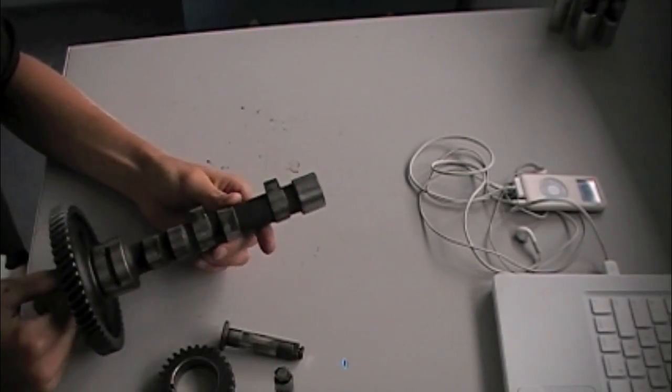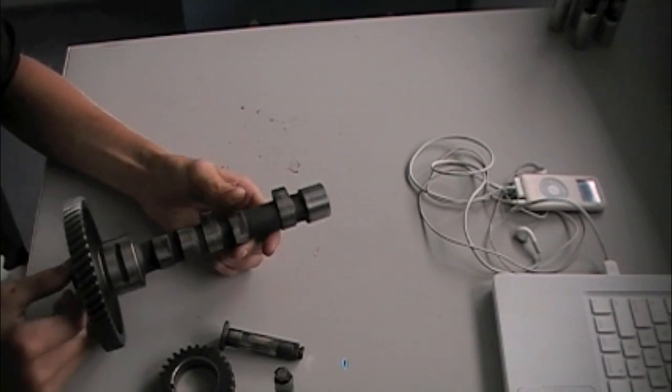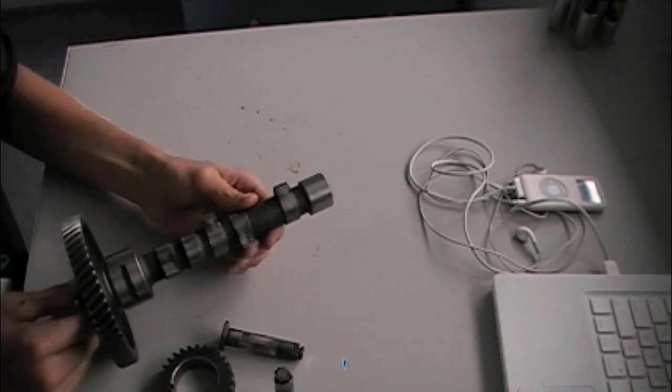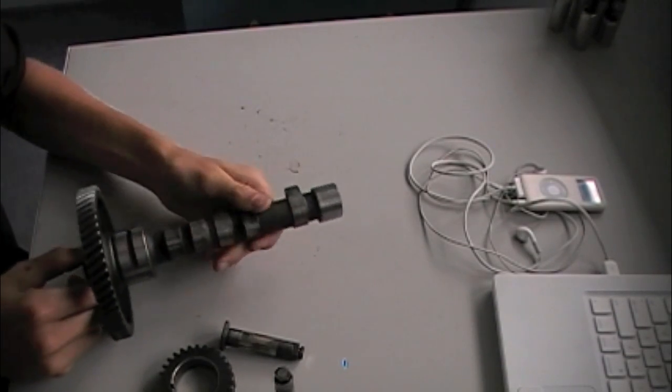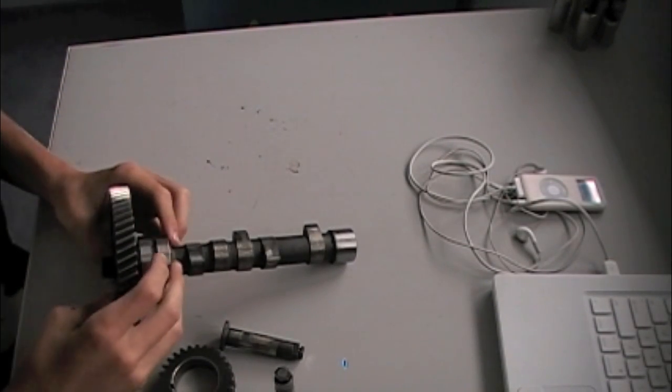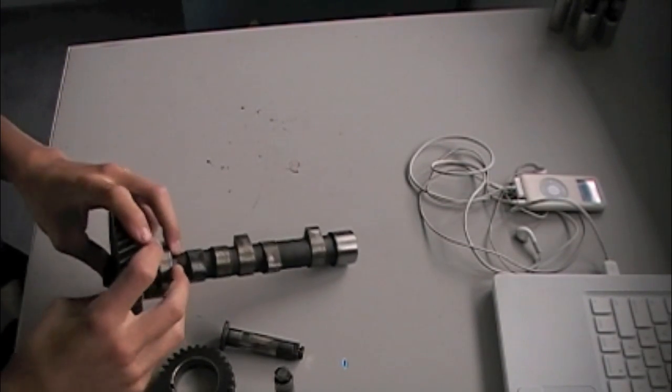That's basically how the camshaft on a Kohler opposing twin works. If I missed anything, leave a comment. If you have questions, leave a comment. And check out my channel because there might be something you like there.